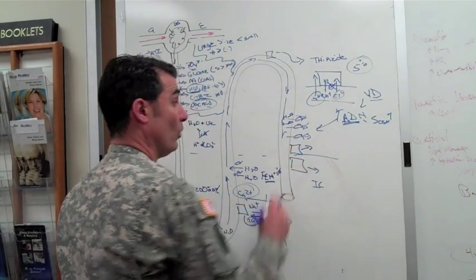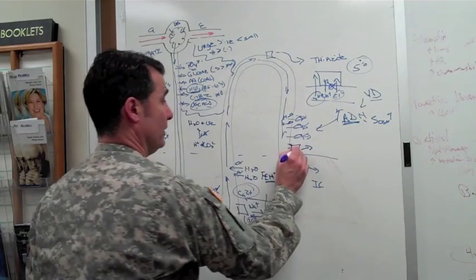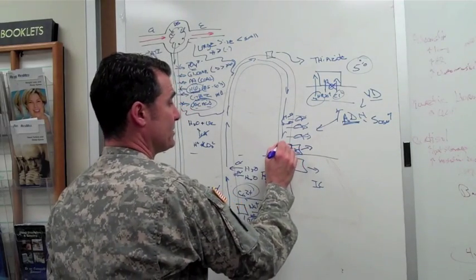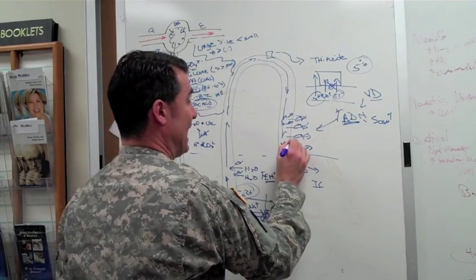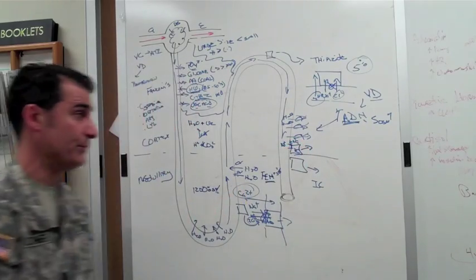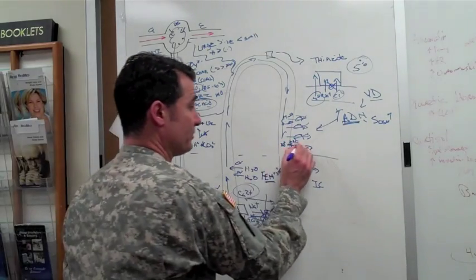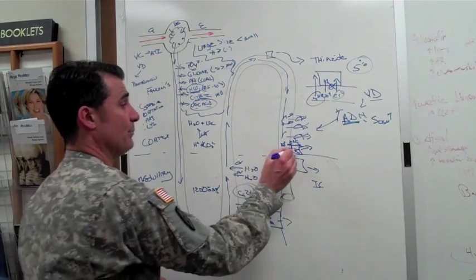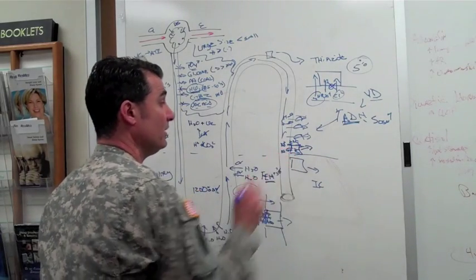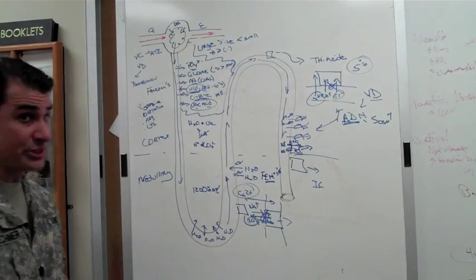So on the lumen side of the principal cell is a sodium channel, it's called the ENAC channel, epithelial sodium channel. Sodium is reabsorbed at this stage and potassium is dumped into the urine in exchange for that.